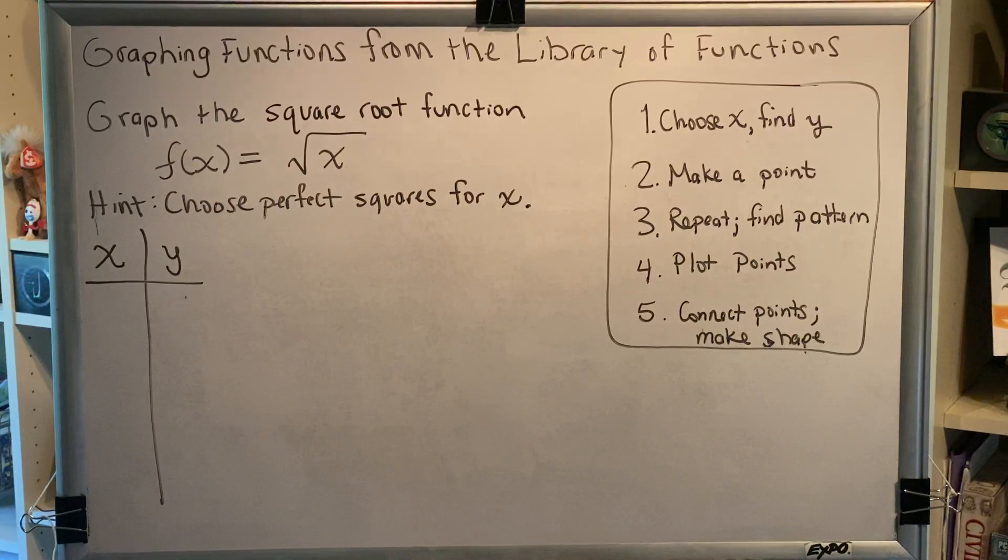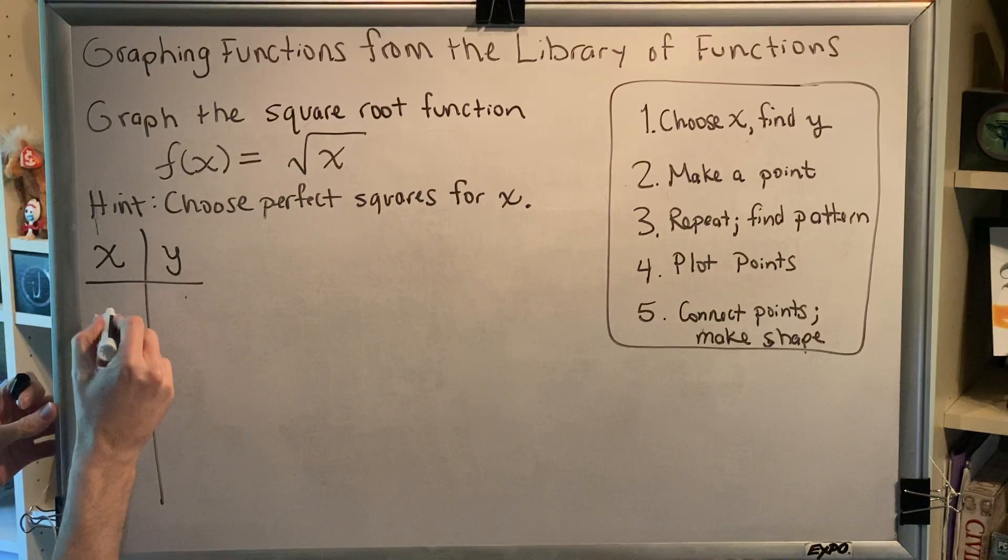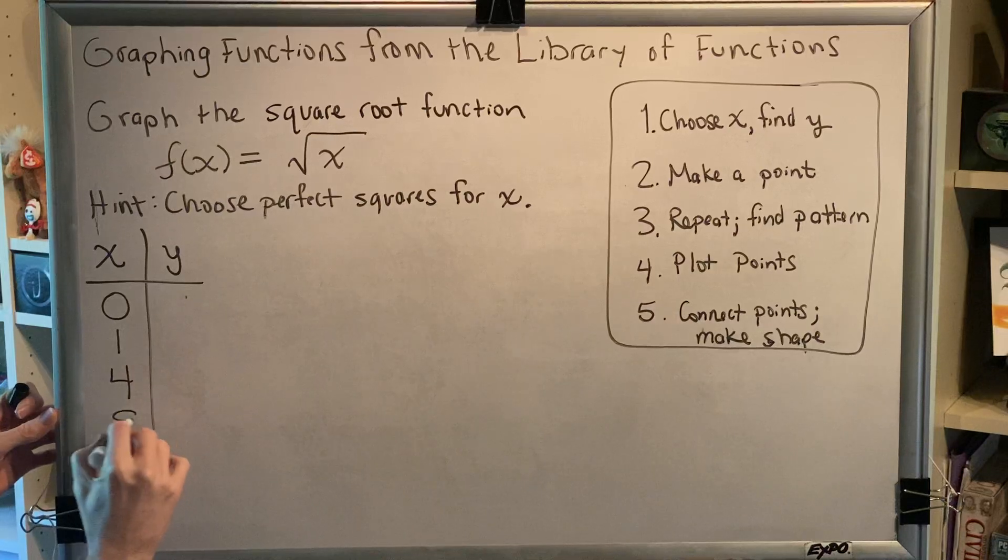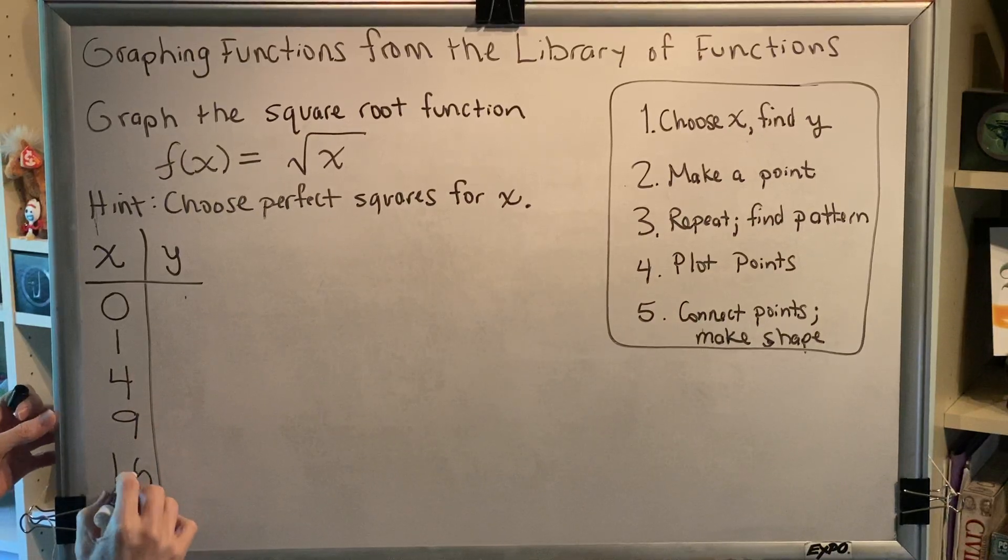Alright, well, the first five perfect squares are 0, 1, 4, 9, and 16.